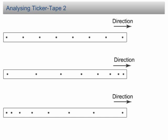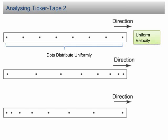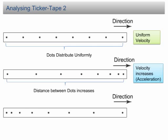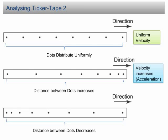Analyzing ticker tape further with more examples. In the first strip, the dots are uniformly distributed, indicating that the object moved at uniform velocity. In the second strip, the dots are initially close to each other, then the distance between the dots increases uniformly, meaning the velocity of the object increased over time. In the third strip, the distance between the dots decreases over time, indicating the velocity of the object decreased over time — the object underwent deceleration. In conclusion, we can study the motion of an object by studying how the dots are distributed.